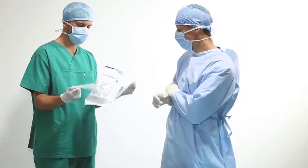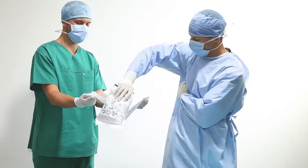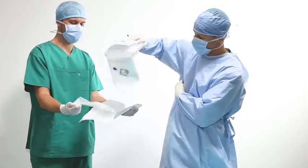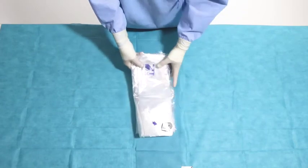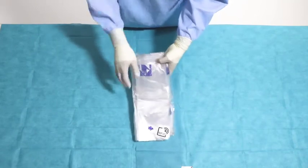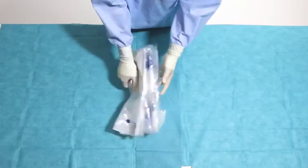The non-sterile nurse opens the pack for the sterile nurse, who lifts it up and places it on the sterile table. Unfold the Smart Drape and look for the hand symbols. The sticker is placed on the fifth layer from the top.